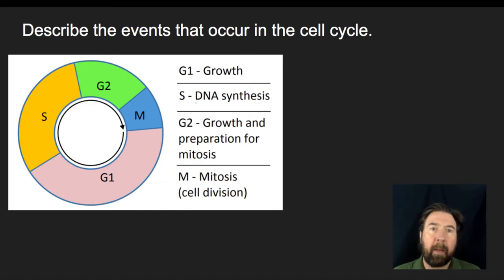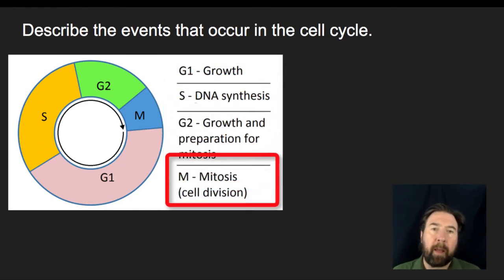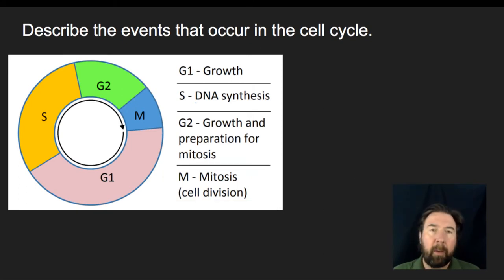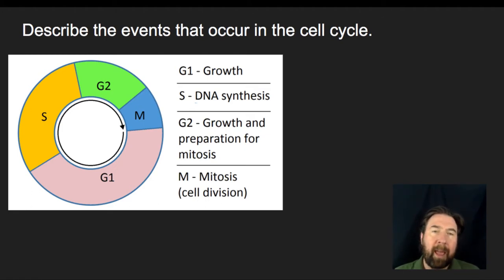We're going to be hitting upon the three components of interphase, which is G1, S, and G2 phase. We will also be talking about the M phase, or mitosis, or cell division. We'll also hit upon cytokinesis, which is at the end stage of mitosis. I'll also bring up what happens if cells don't divide and what phase those roll into. And we're going to be talking about what regulates the cell cycle and what happens when those regulations go wrong.